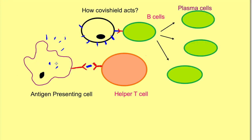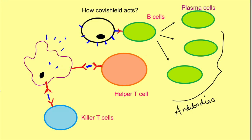These B cells now start maturing and proliferating, causing the formation of plasma cells which ultimately secrete antibodies against these spike proteins. So the vaccine, by delivering the spike protein through the adenovirus, is causing the activation of B cells and the release of antibodies. The antigen-presenting cell also presents the antigen to killer T cells. As the name suggests, killer T cells can actually kill infected cells. Helper T cells also activate killer T cells by releasing certain chemicals known as cytokines.